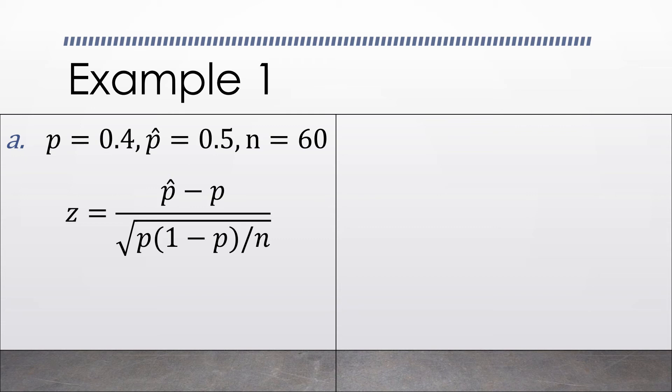So, we have divided by the square root of p, multiplied by 1 minus p, all over n. We have here p-hat as 0.5, p as 0.4,